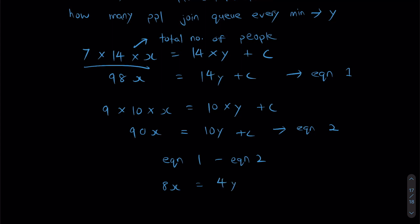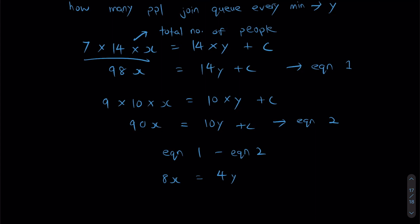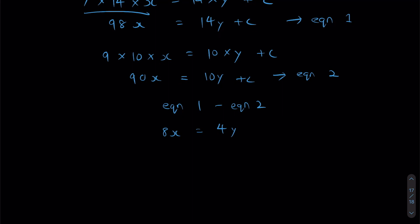So as you can see, from three unknowns, I'm now down to two unknowns. If I do some further simplification, I realize that Y is equals to 2X. And that's really helpful for me.